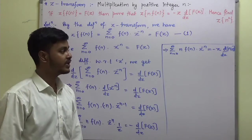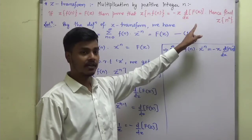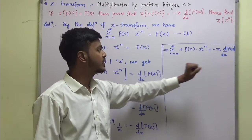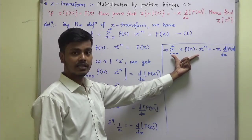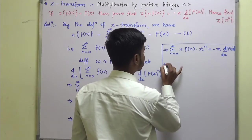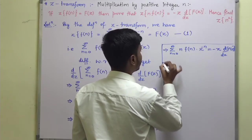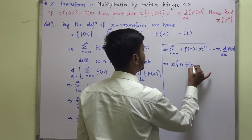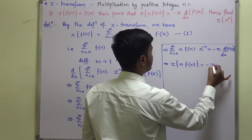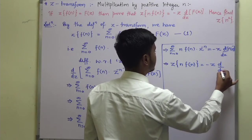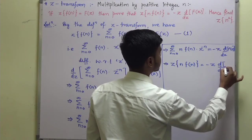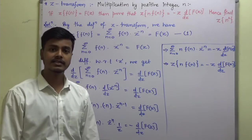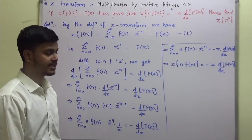By definition, the left-hand side is the Z transform of n·f(n), which equals minus z times d/dz of F(z). This proves the result.